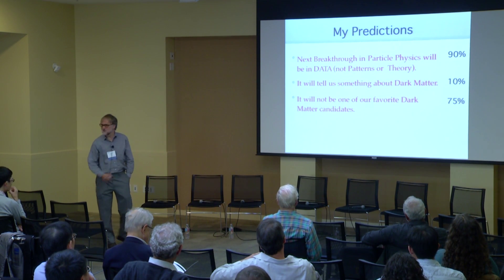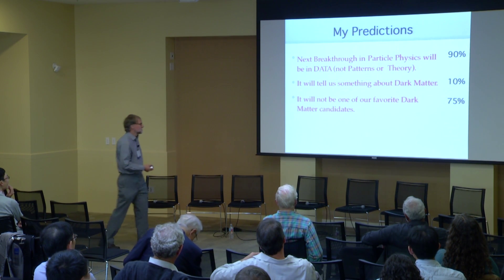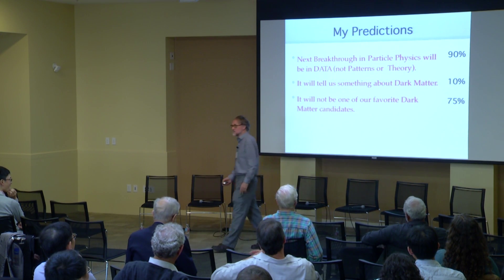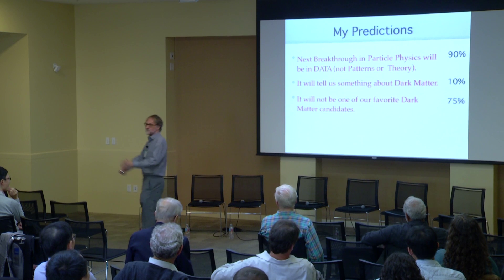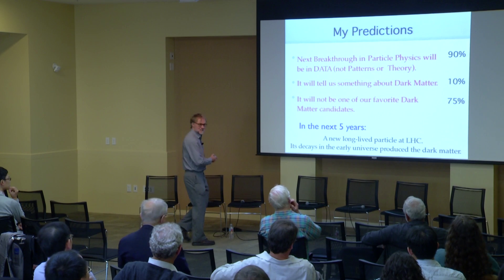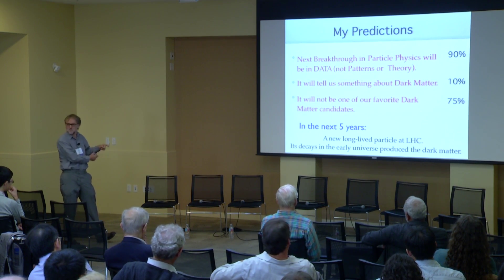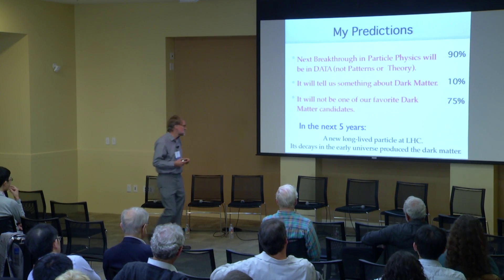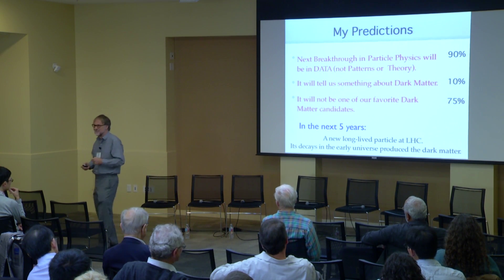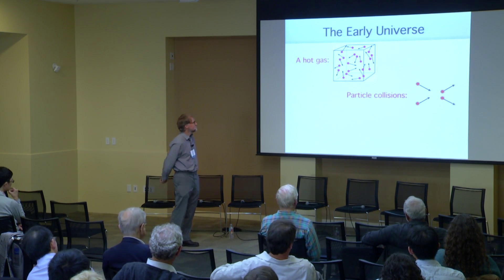What probabilities do I ascribe to this? Well I really think it's going to come from data. Is it going to be dark matter? I really don't have a clue. But I think it will be. If it's dark matter, is it going to be some non-standard theory? Yeah, I think probably so. But I'm going to go further and say that in the next five years there's a very specific new long-lived particle that will be discovered at the LHC, and that its decays will tell us exactly how the dark matter was made in the early universe. I really don't dare to predict the probability that this is right.